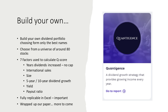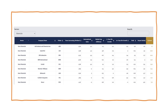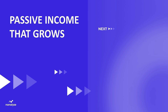Another option — what we do here at Nanalyze — is build your own dividend portfolio choosing from only the best names. We built a strategy called Quantigence, developed after a decade working in the industry and time in the academic world. We're wrapping up an academic paper and will release data soon in video form. We use seven factors to calculate a Q score: years of dividend increases, international sales size, 5- and 10-year dividend growth, yield, and payout ratio. We built a calculator filtering by sector — here filtered on materials — showing Q scores ranked along the right, with APD at the top. This is being developed for our premium subscribers.